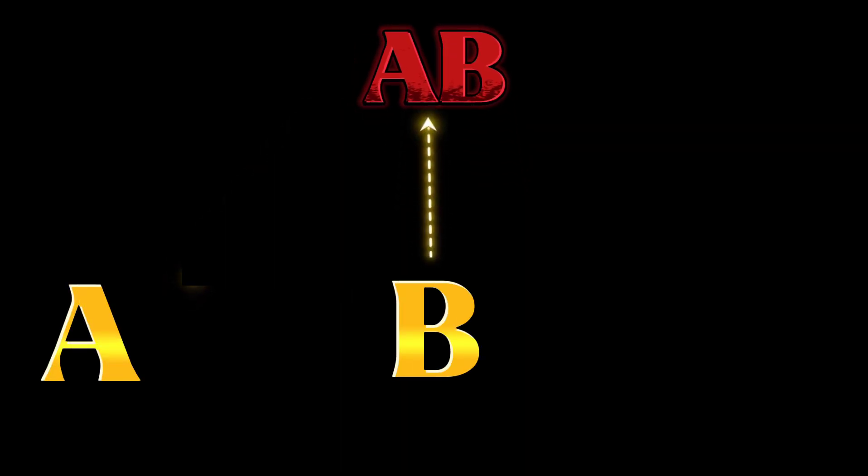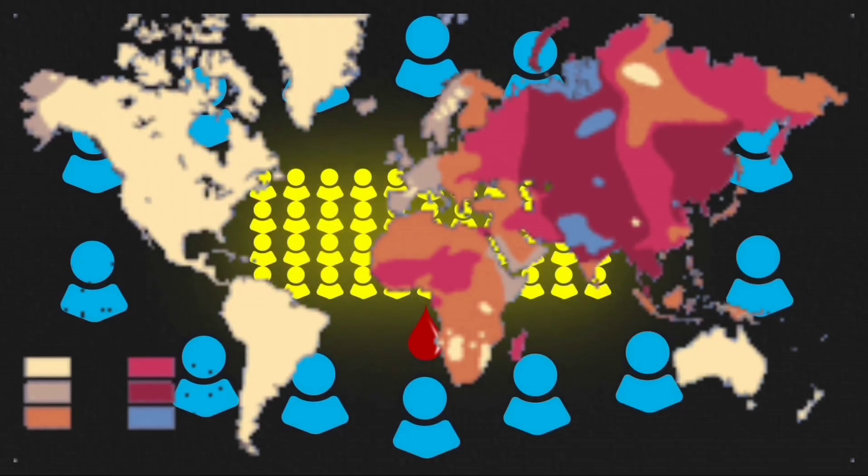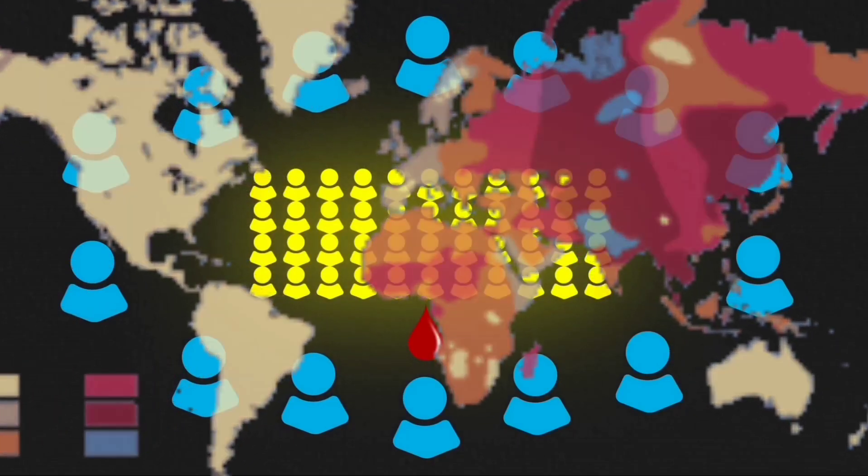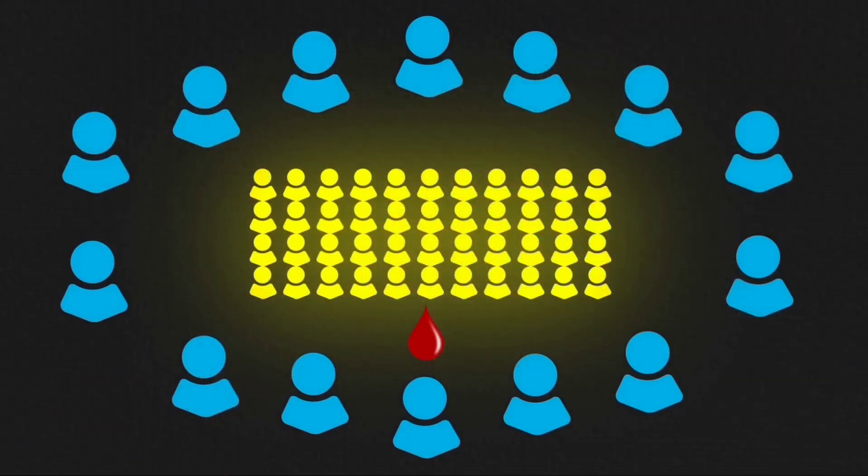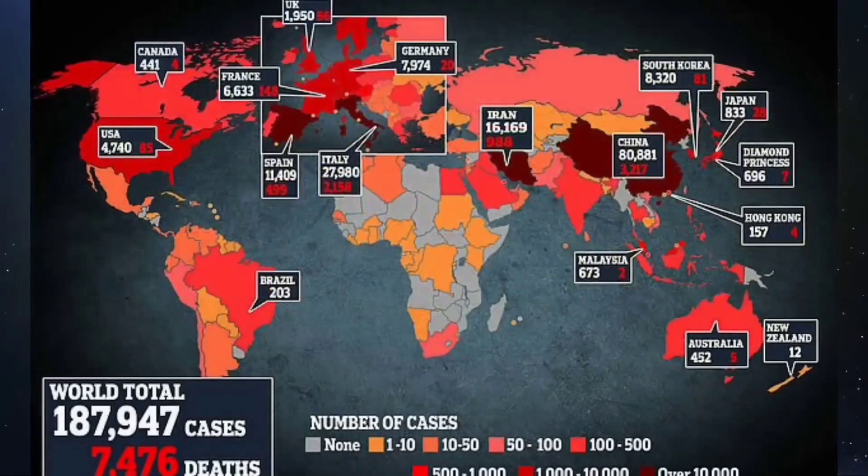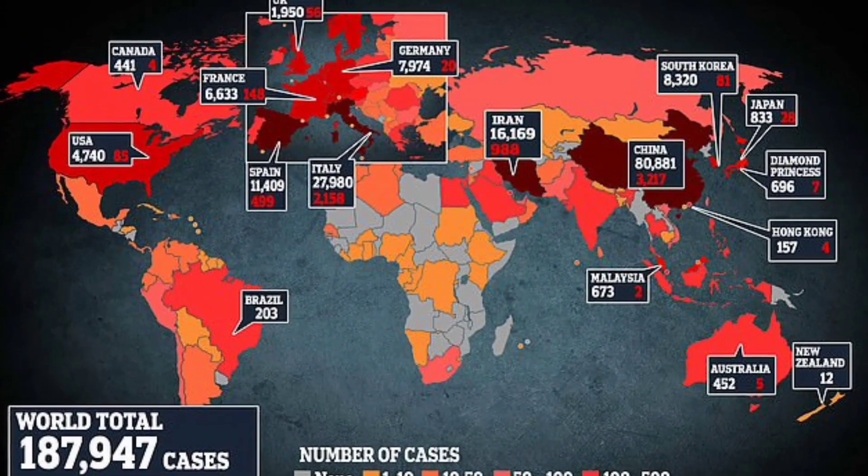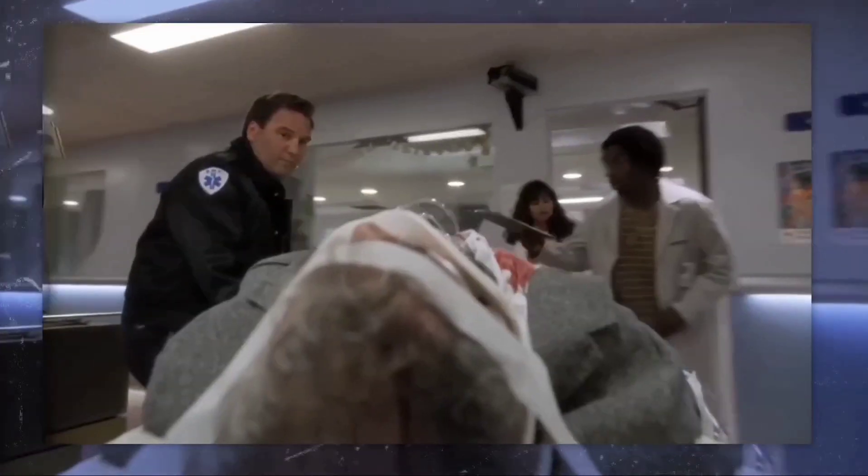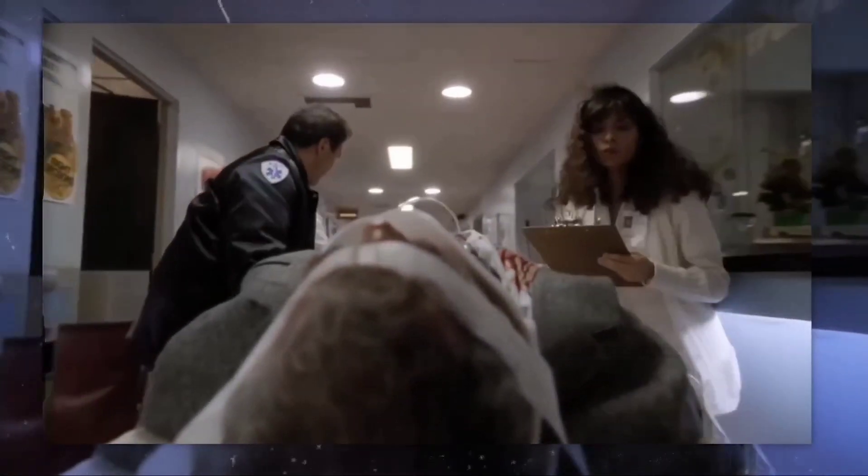Fact 3. AB people can receive blood from anyone with A, B, AB, or O blood. This is why they're called universal recipients. Their immune systems don't attack A or B antigens. That gives them the ability to receive red blood cells from any ABO type. In an emergency, this can be life-saving. But there's a catch. They can only give blood to other ABs.